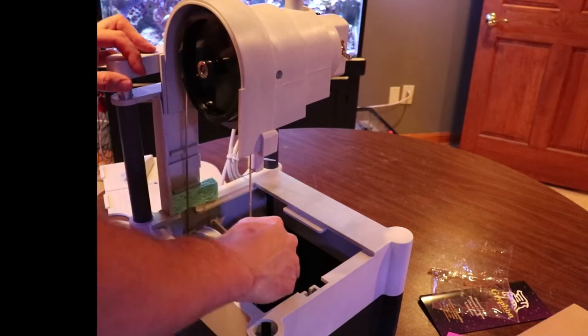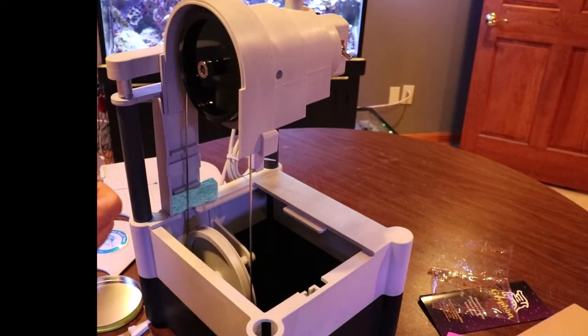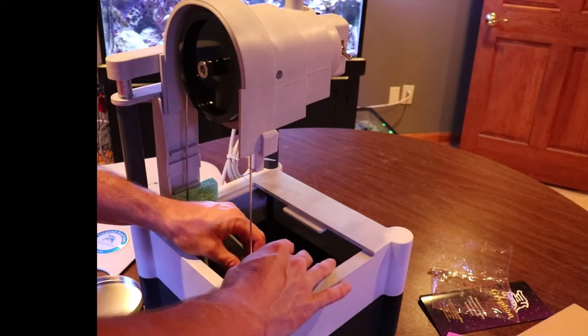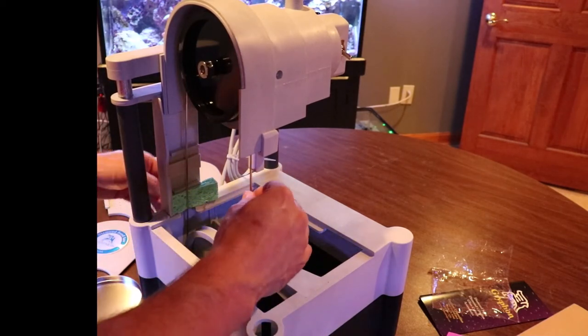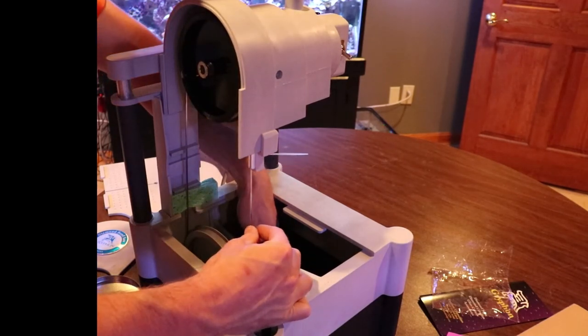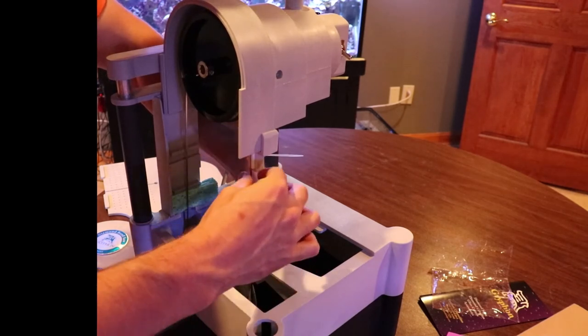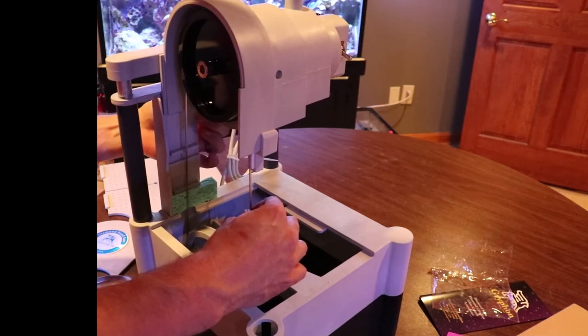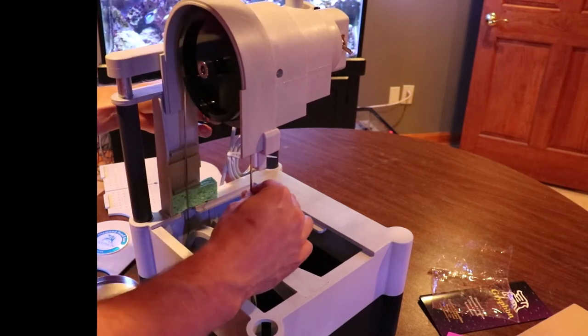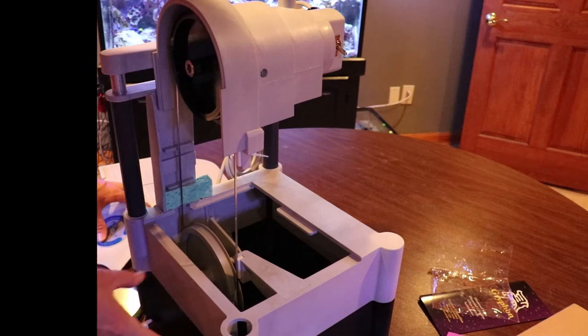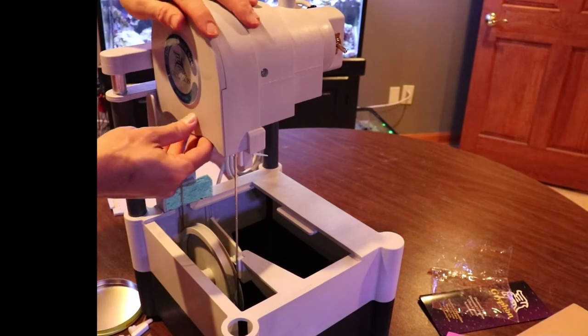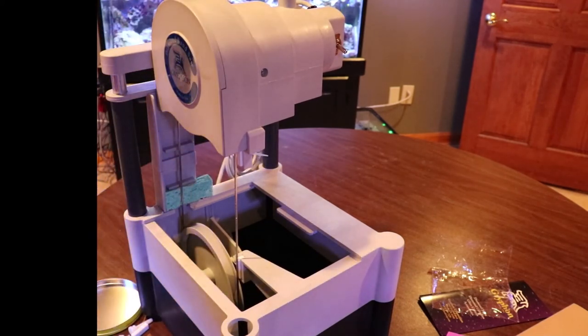So after you get the blade back on and the tension set, you can go ahead and put your bottom sponge back in and you can put your bottom blade guard on. If I keep messing with that bottom wheel adjustment, don't do that unless you have to. Just don't mess with it. I finally get it where it needs to be. But you want the blade to ride towards the back of the drive wheels.